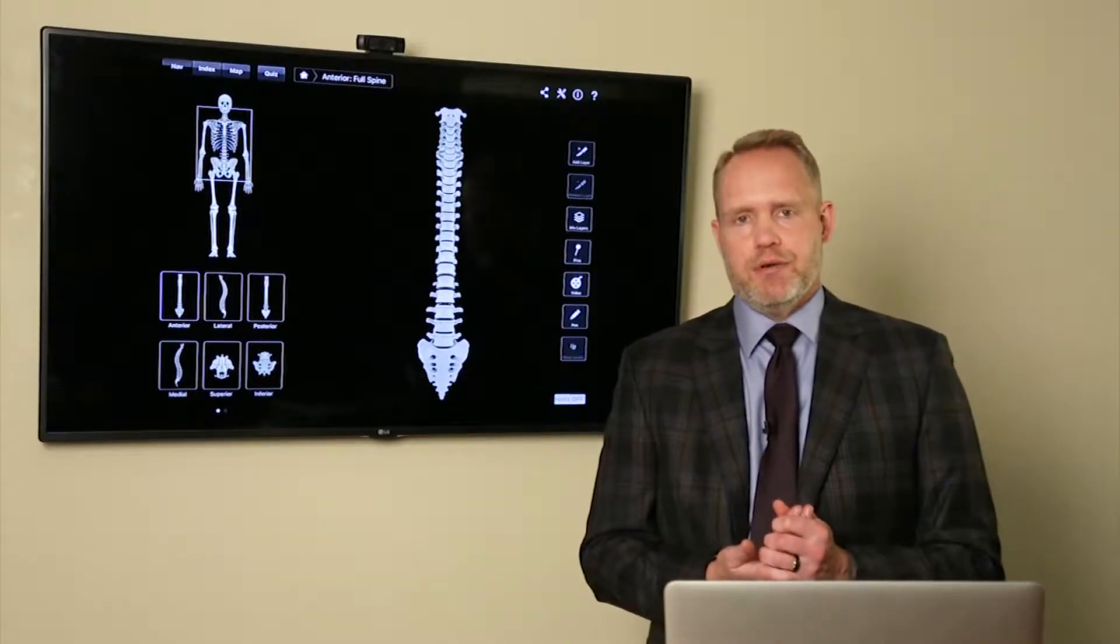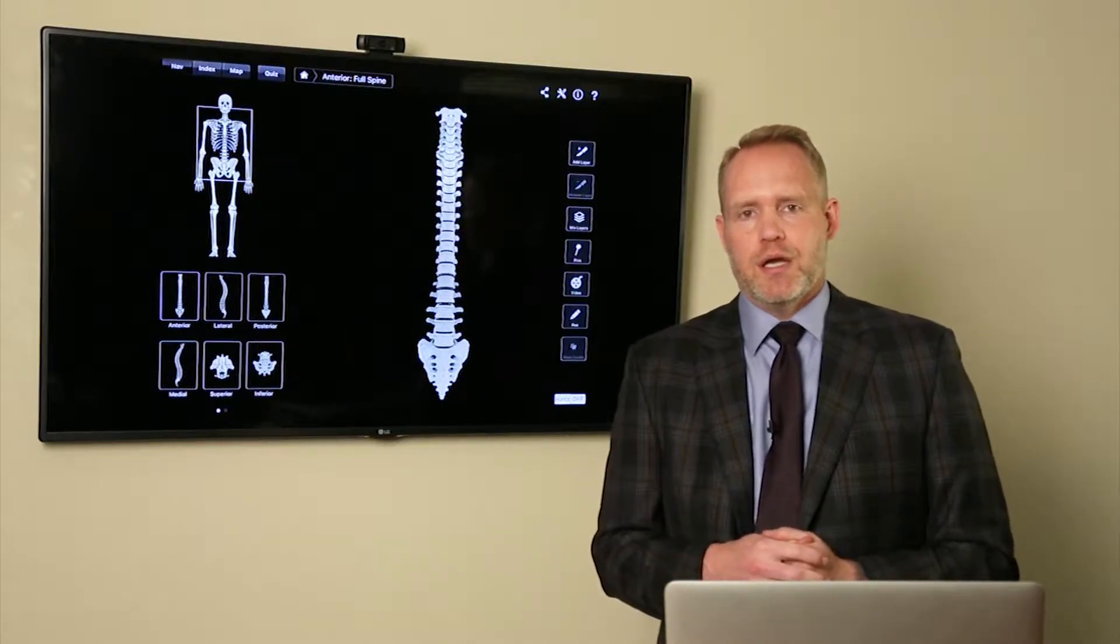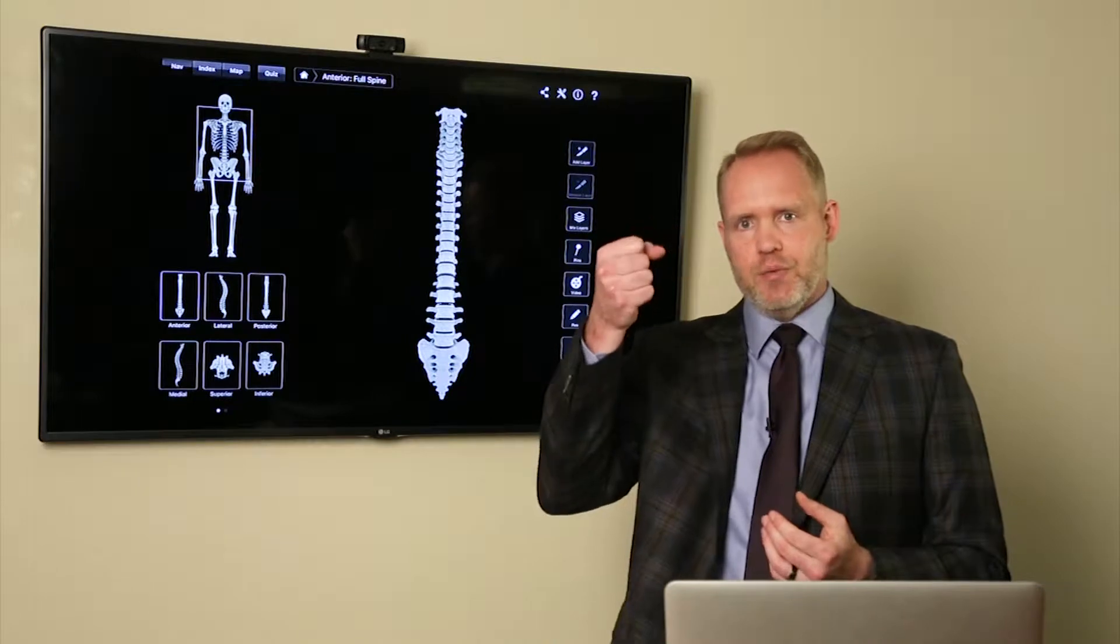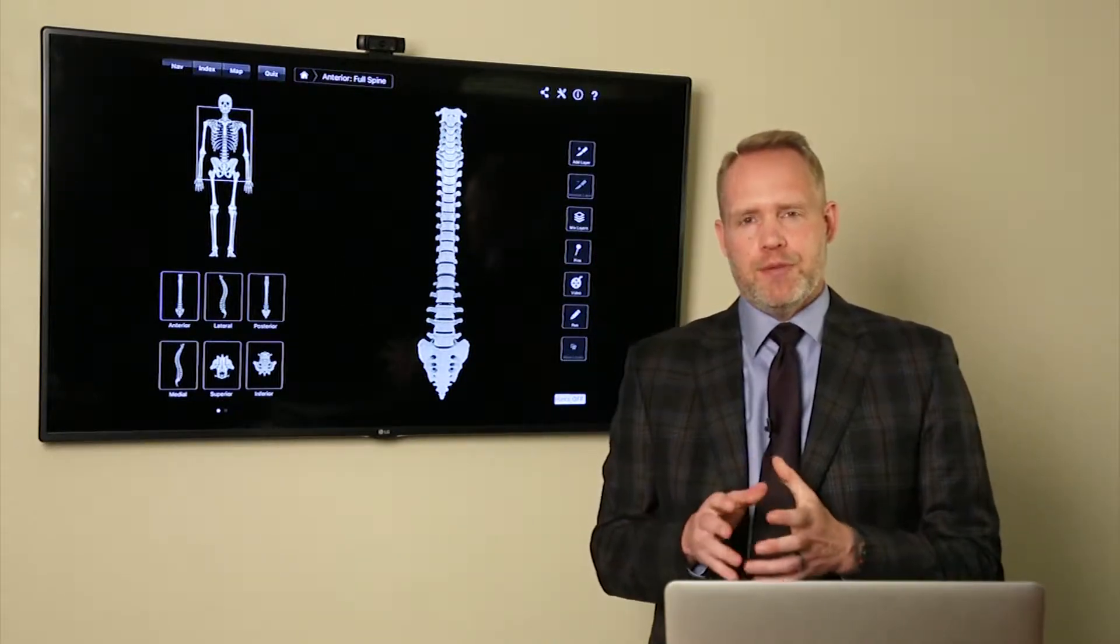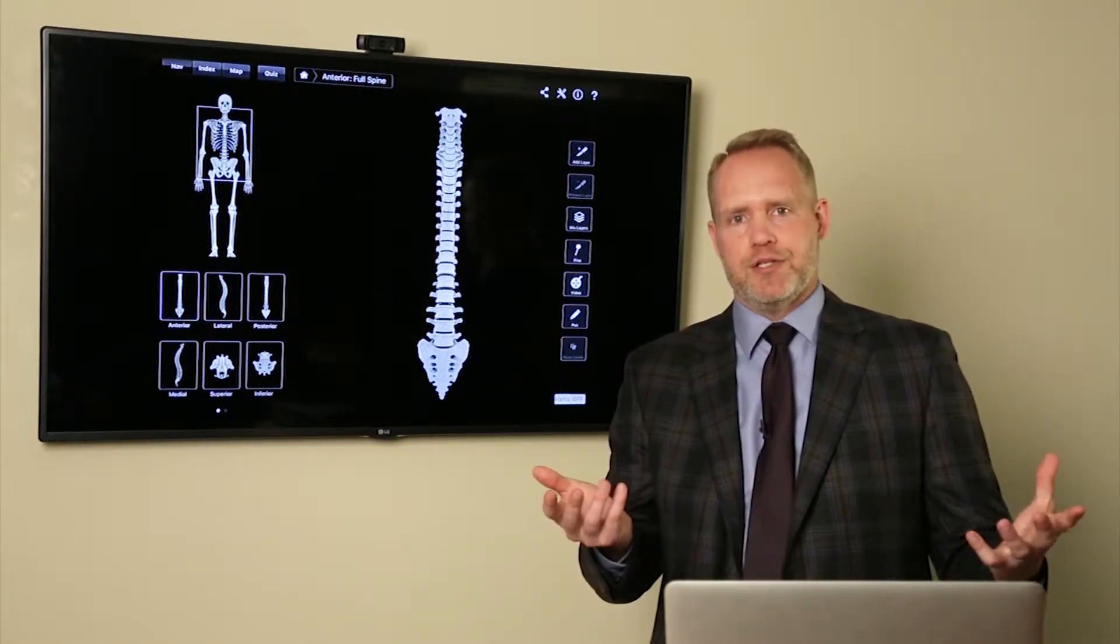So the spine is a fairly complicated series of bones, and between each bone, there's a series of joints. Most people know what the discs are between the spinal levels. You have like a C1 and C2, and there's a nice disc in between. But many people don't realize there's two additional joints between each level, and those are called facet joints.